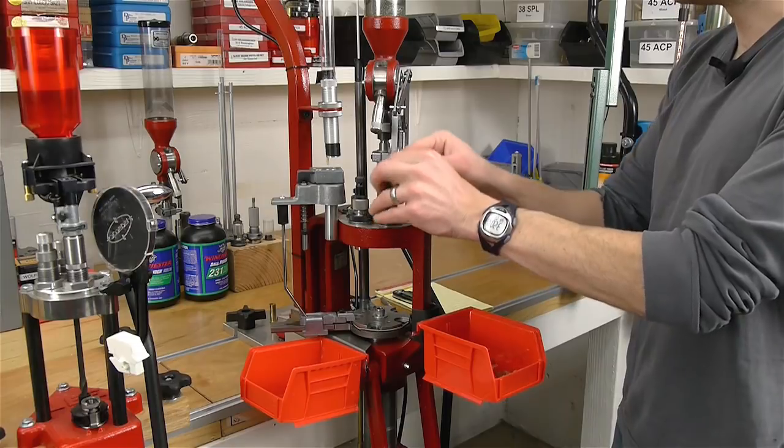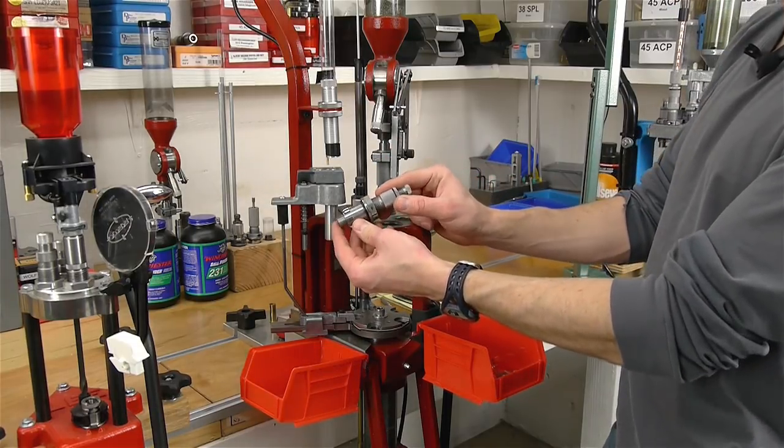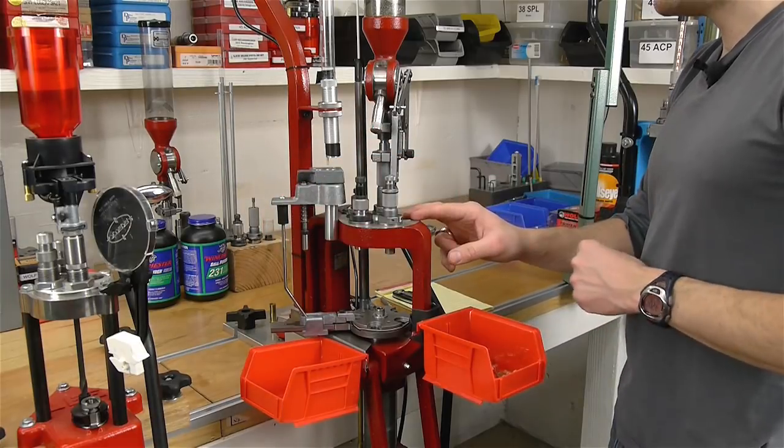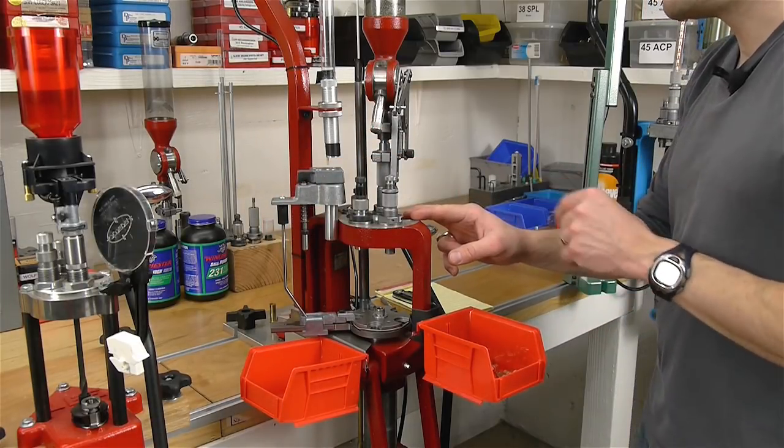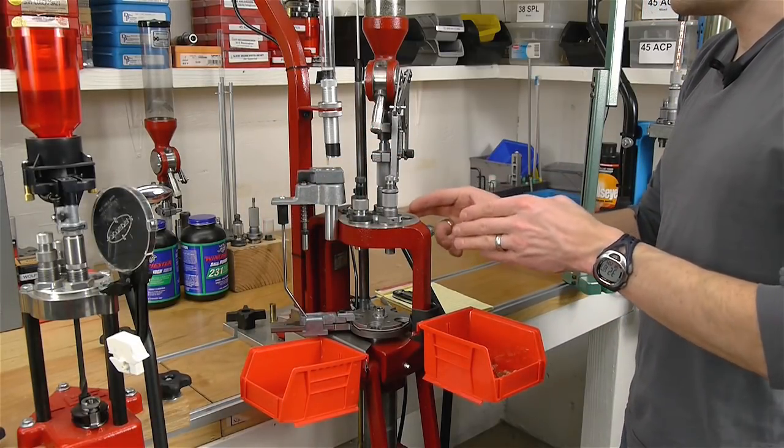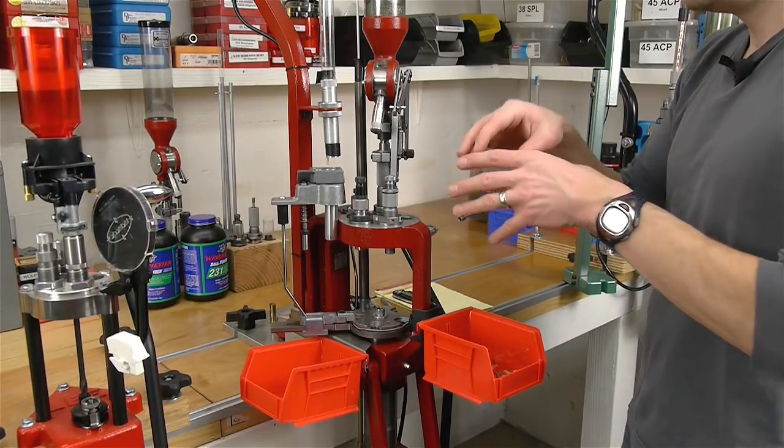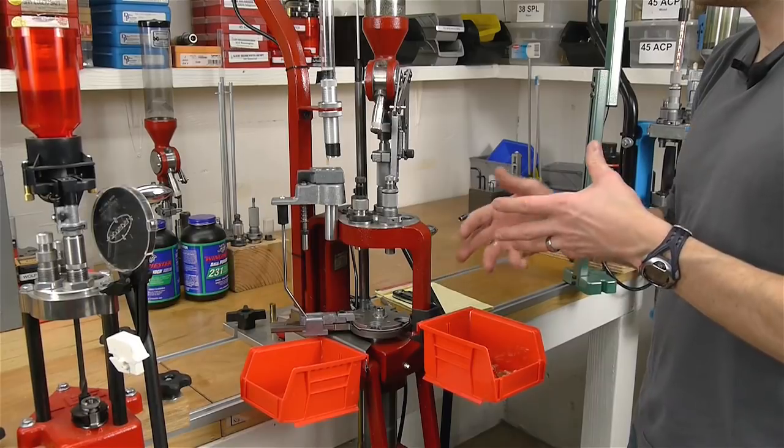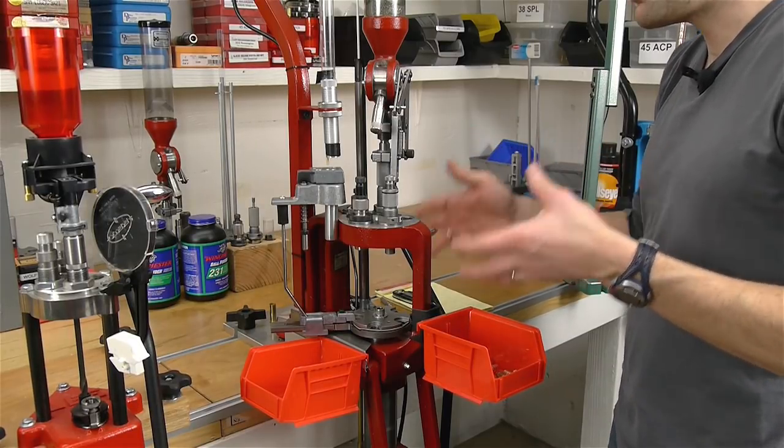This is a press where the dies snap in and snap out like the converted press that I showed you with the Redding Big Boss 2. Some of them have tool heads that slide in. Again, they're going to hold the dies, that's the purpose, and those are the kinds of things that you're going to need to spend money on on a per caliber basis.